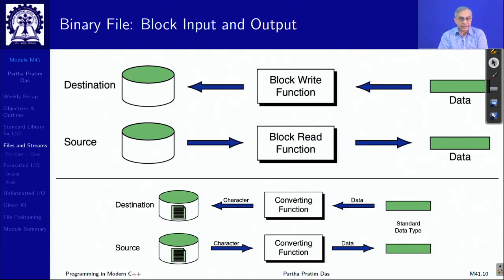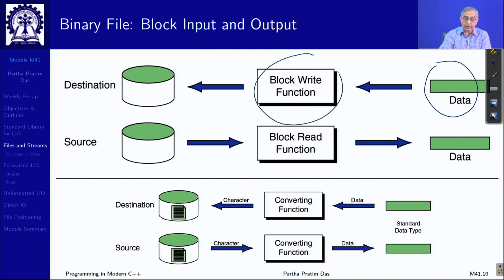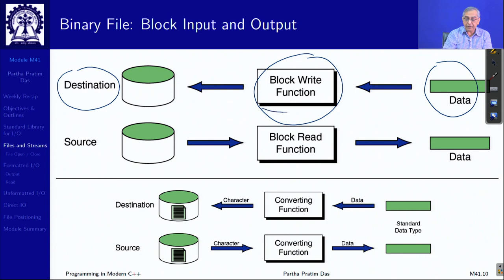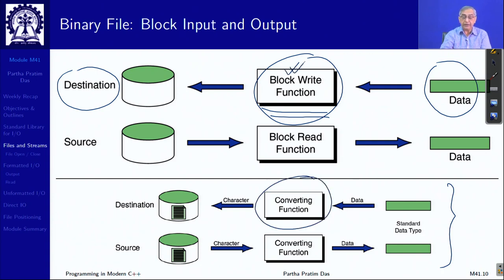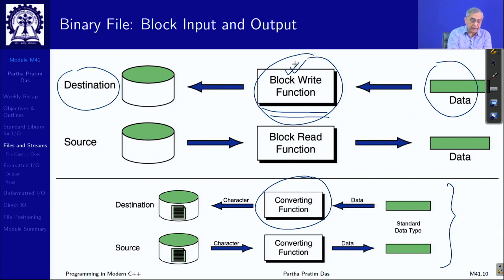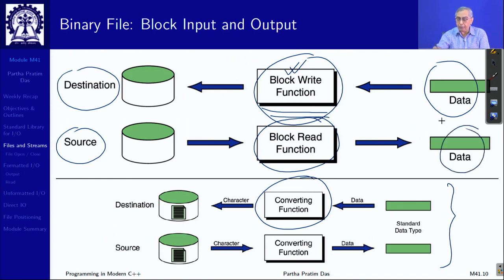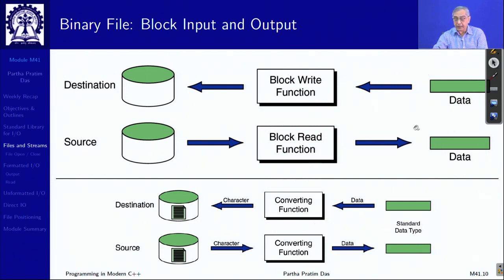The other form of I/O available through the C standard library is direct or block I/O. A block write function takes the data chunk as it exists in memory and writes it to the destination without any conversion — it takes the data in binary form and puts it directly. Similarly, in reverse, a block transfer reads bit patterns from the source and puts them into memory. These are the two broad types of I/O available in C.